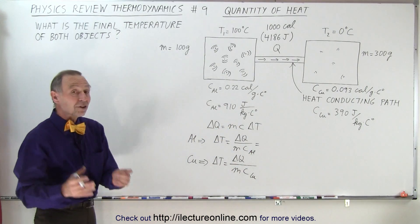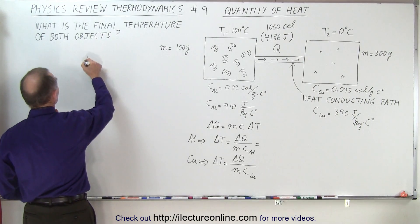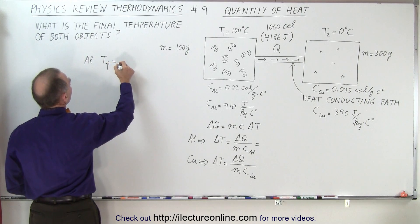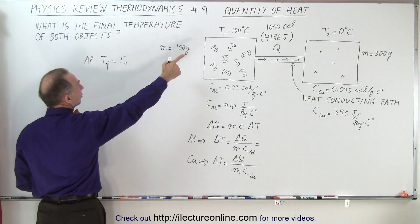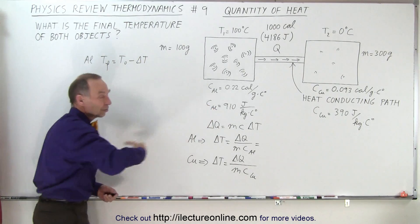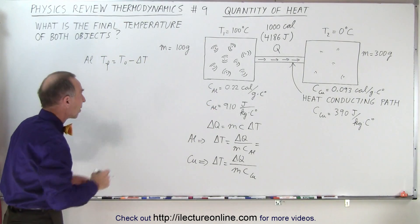Once you have the change in temperature, then you say that for the aluminum, T final must be equal to T initial, which is 100 degrees Celsius, minus the change in the temperature, because you're moving away heat, you're taking heat away, and so the temperature will drop.